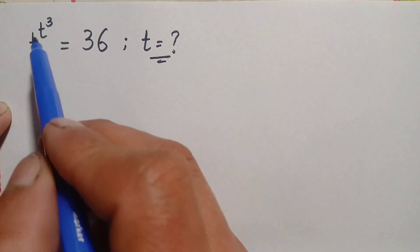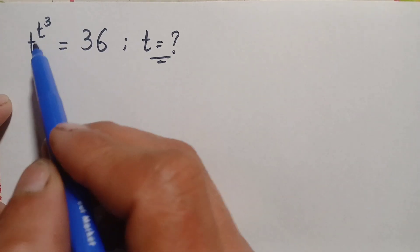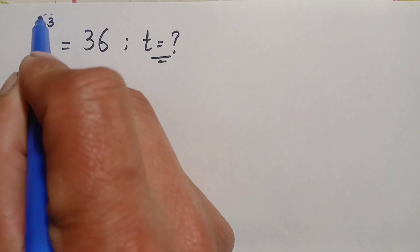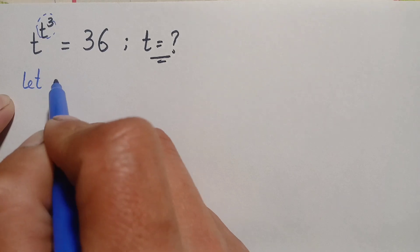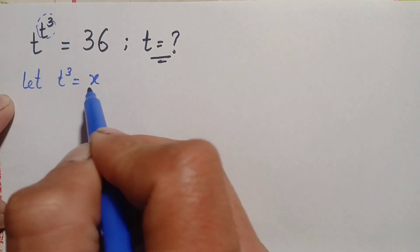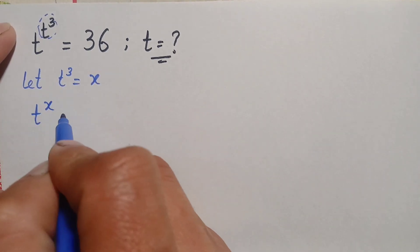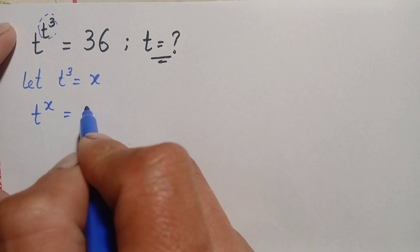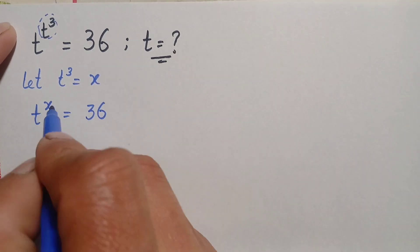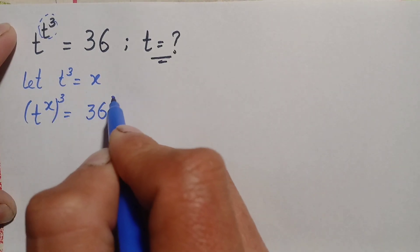Let us suppose this power t cubed, or t raised to power 3, is equal to some variable x. So let this power t cubed be equal to x. We will then flip this power with x, so this equation will become t raised to power x is equal to 36.